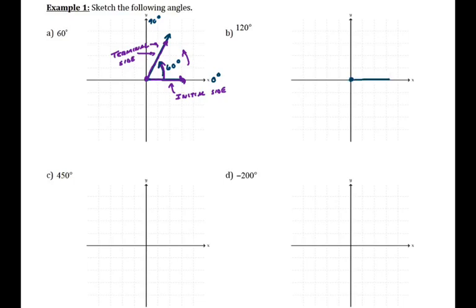For part B, I'm going to draw my initial side. 120 degrees should put me somewhere between 90 and 180 degrees. So there's 120 degrees between my initial and terminal side. In a little bit we're going to reference how far away my terminal side is from the x-axis — in this case it's 60 degrees, because 180 minus 120 is 60 degrees. There's a name for that and we'll talk about it here in a second.